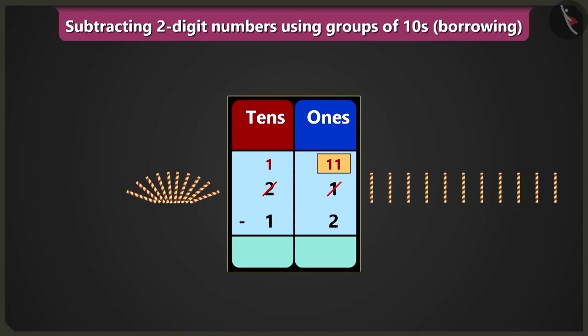if we will subtract two ones from eleven, then we will be left with one, two, three, four, five, six, seven, eight and nine in the place of ones.